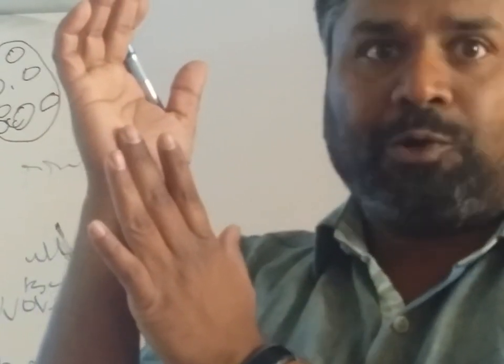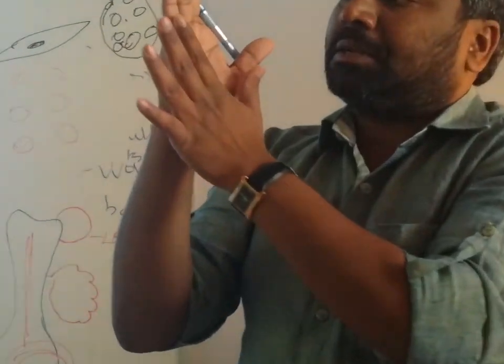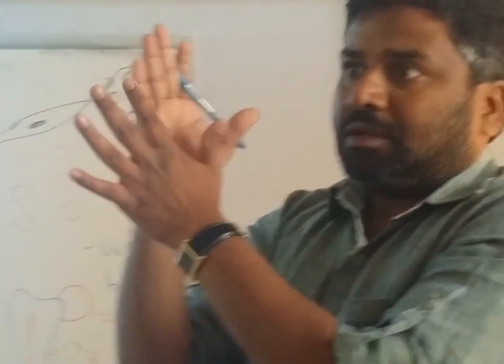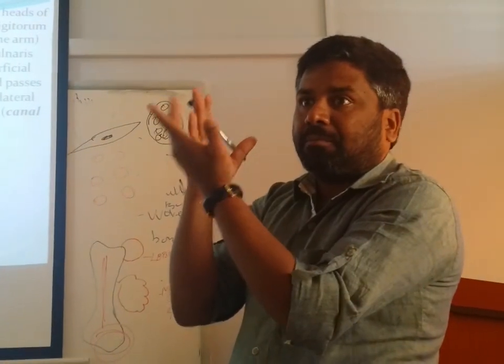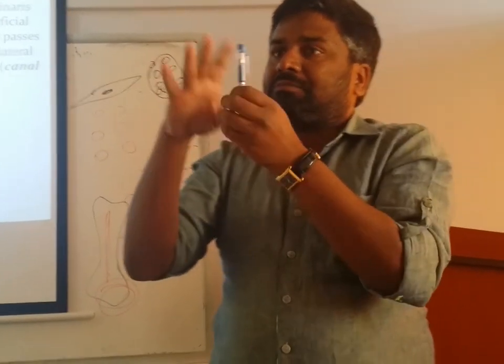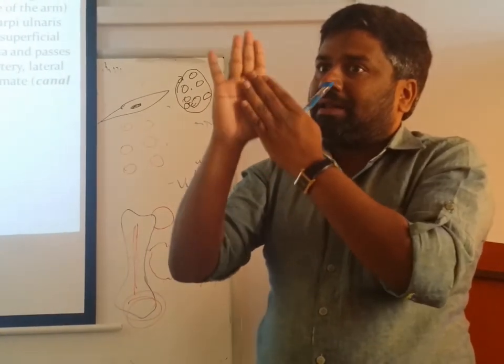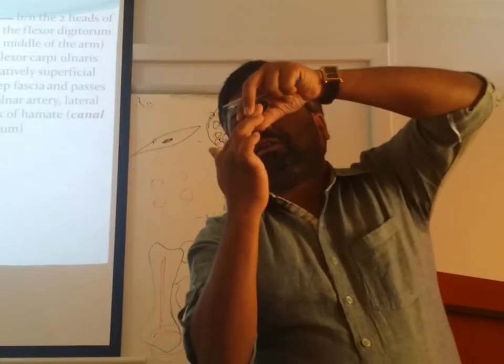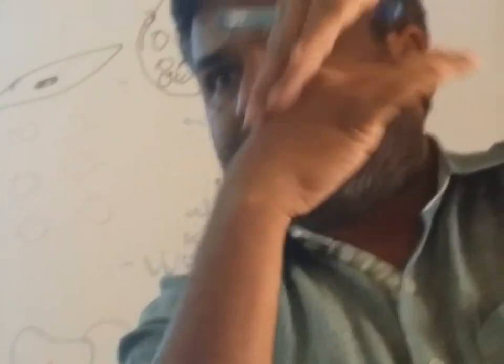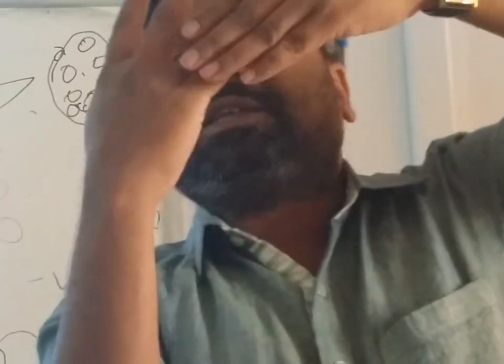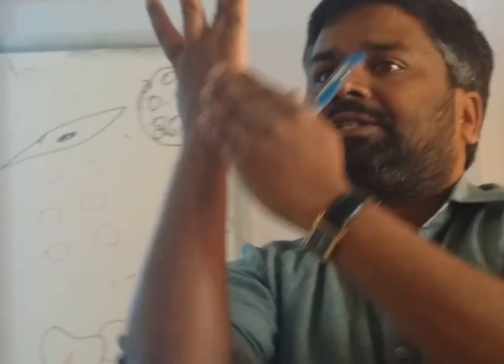After entering the hand, the ulnar nerve divides into a superficial cutaneous branch and a deep branch supplying many muscles in the hand. The superficial branch supplies one and a half fingers — the medial one and a half — on both the palmar side and dorsal side. The median nerve supplies three and a half on the palmar side and only the nail beds on the dorsal side, while the rest of the dorsal side is by the radial nerve.